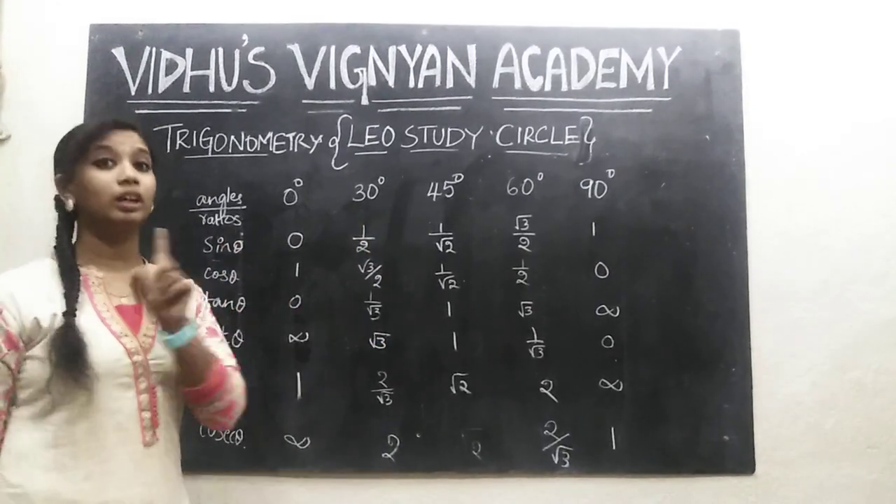Cos 90° is 0. Don't forget, secant 90° is reciprocal of 0, that is 1 by 0. Anything by 0 is infinity, so secant 90° is infinity. Next, cosecant theta. You can do 1 by sin theta or reverse secant theta. Directly write infinity, 2, root 2, 2 by root 3, and 1.